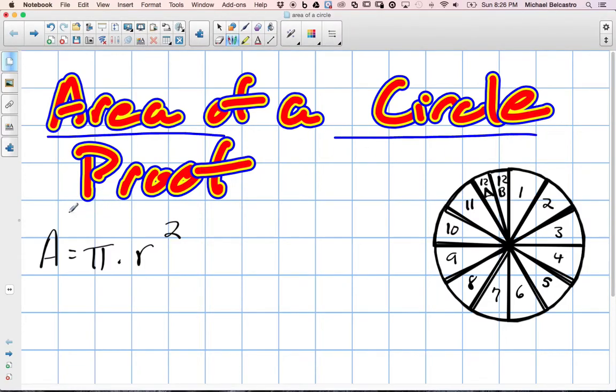We're going to look at the area of a circle and the proof to it, so why this formula works or why it's kind of set up this way.